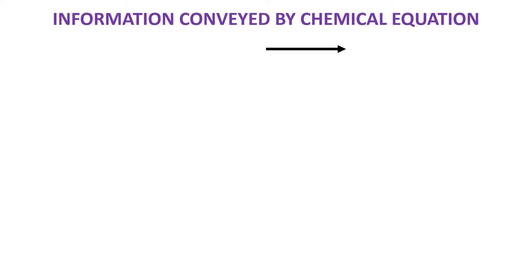Dear students, we now move on to the next thing. After learning the steps for writing a balanced chemical equation, we will now see what is the information that is conveyed by a chemical equation. So what information does a chemical equation give us? Let's see what is the information.